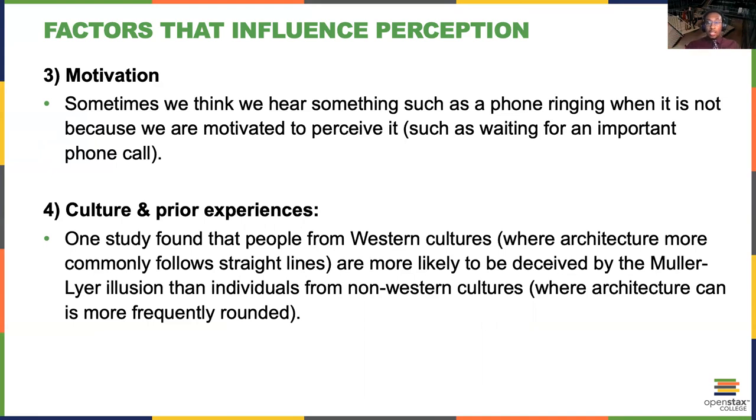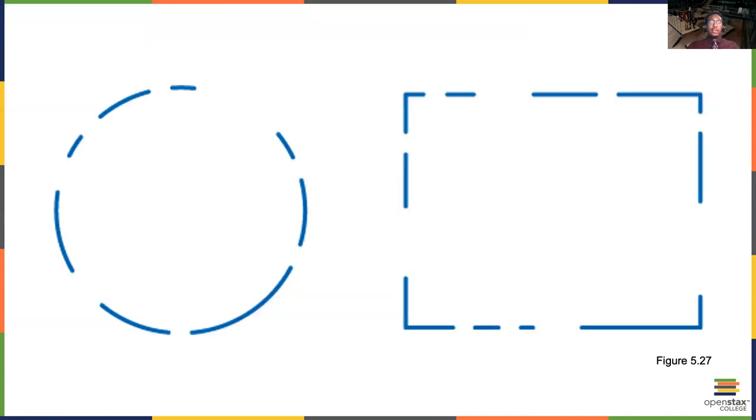Then there's also culture. So for example, with the Müller-Lyer illusion, one study found that people from Western cultures where architecture more commonly follows straight lines are more likely to be deceived by the illusion than individuals from non-Western cultures where architecture is more frequently rounded. In that study, they use individuals from the Zulu culture in South Africa where architecture is often arranged in circles and they were much less susceptible to that illusion.